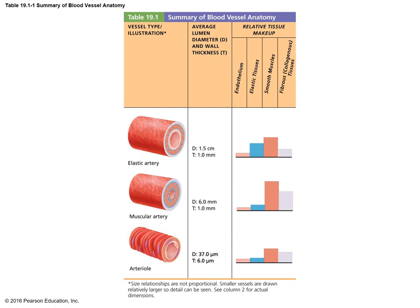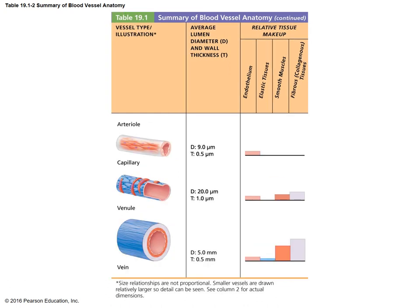This table provides a visual comparison of different types of arteries — elastic arteries, muscular arteries, and arterioles — comparing their different layers. It continues with a comparison between the capillary, the venule, and the veins.